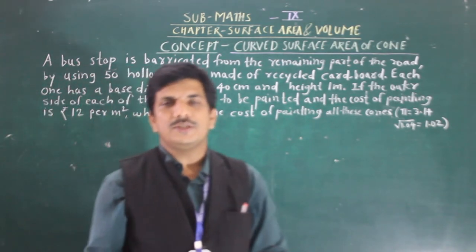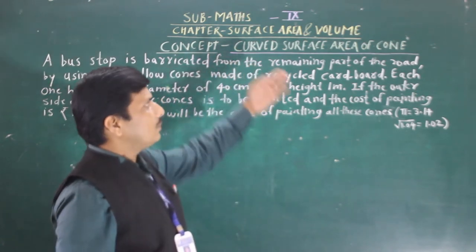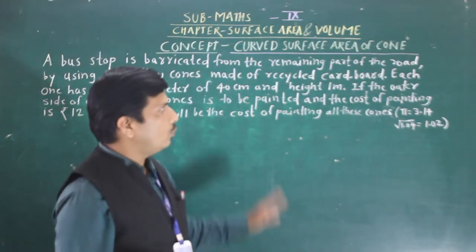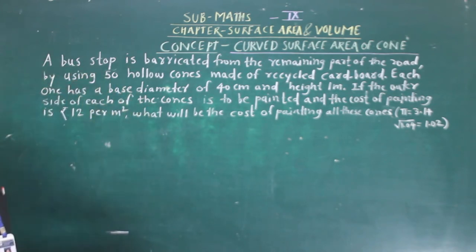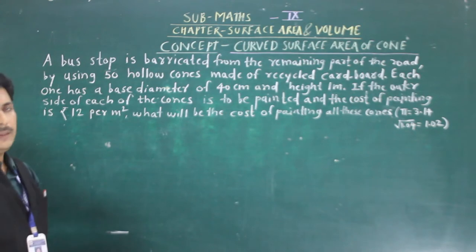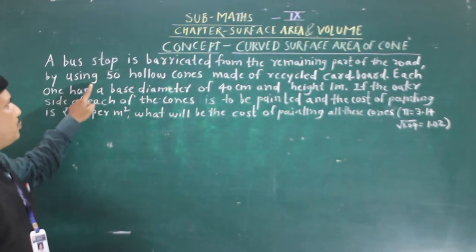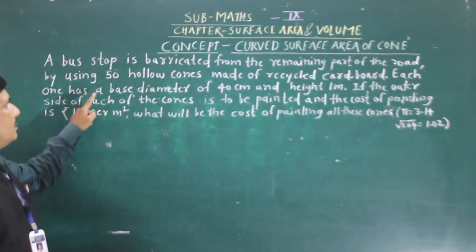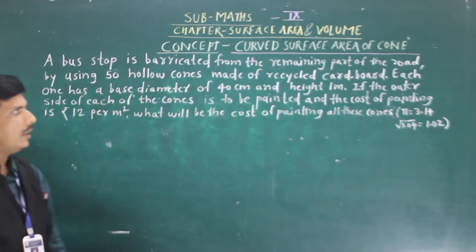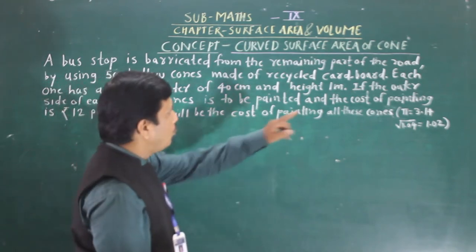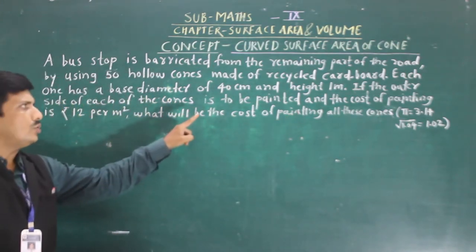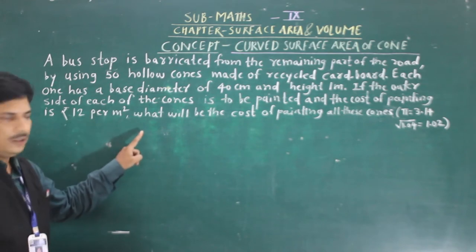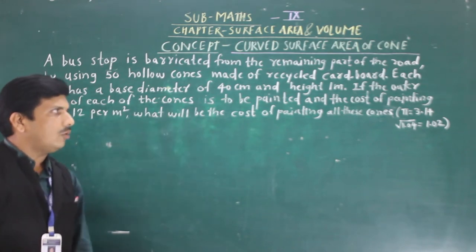Hello everybody. Today we are going to see some problems related to the surface area of a road, that is right surface road. A bus stop is barricaded from the remaining part of the road by using 50 hollow cones made of recycled cardboard. Each one has a base diameter of 40 cm and height 1 m. If the outer side of each of the cones is to be painted and the cost of painting is 12 per m², what will be the cost of painting on these cones?